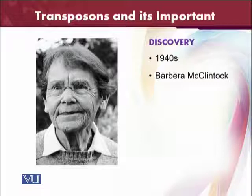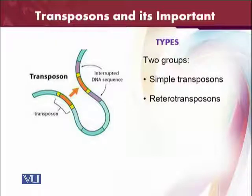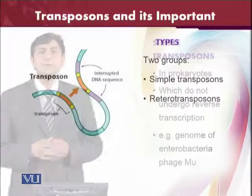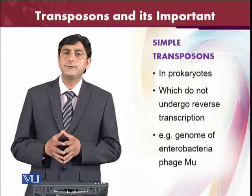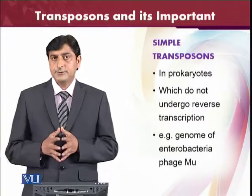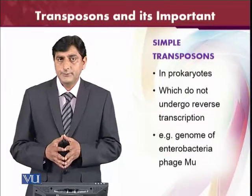Later, we came to know that there are two groups of transposons present inside the viruses. One is called simple transposons and the others are retro transposons. As you can see in the figure provided, there are interrupted DNA sequences and single transposons. What is the difference between simple transposons and retro transposons — the interrupted DNA sequences?